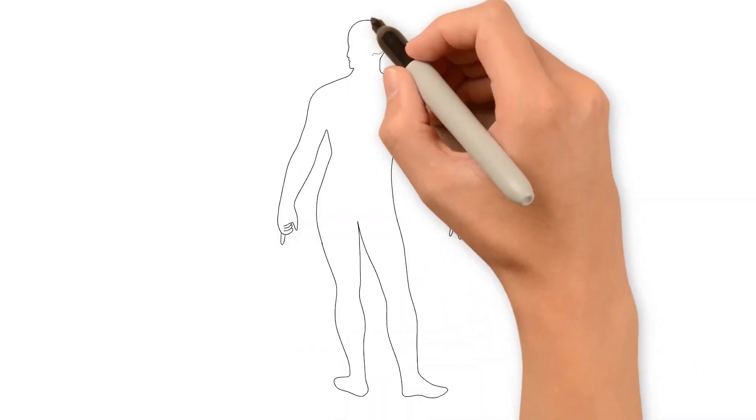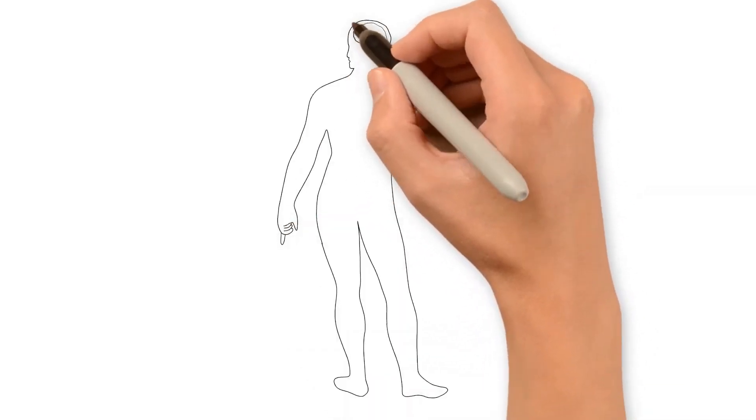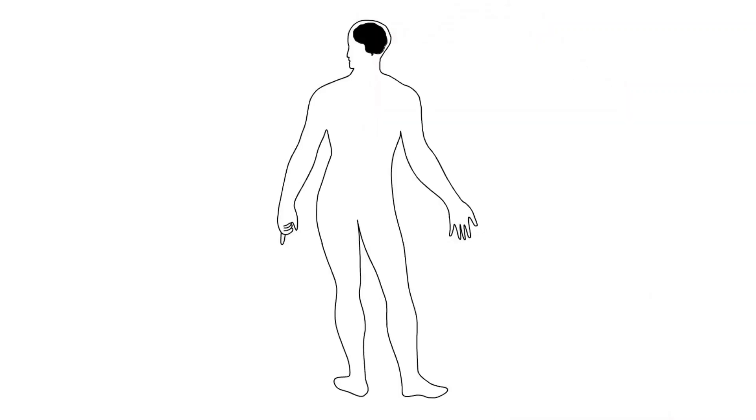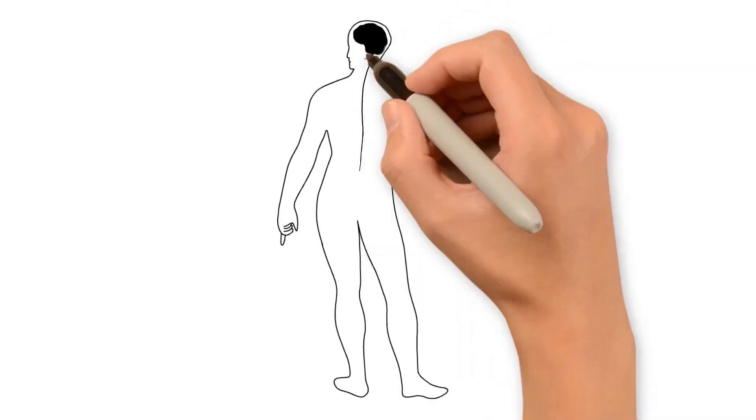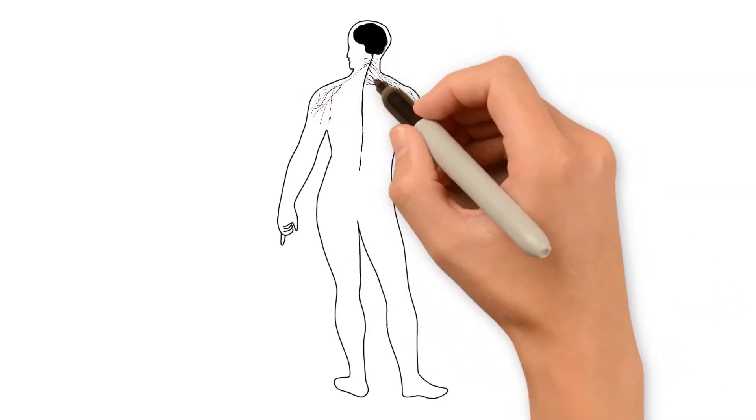It all starts with your brain. The brain controls and coordinates every single tiny cell within your entire body. And considering you have about 50 to 100 trillion cells, that's a lot for your brain to think about.